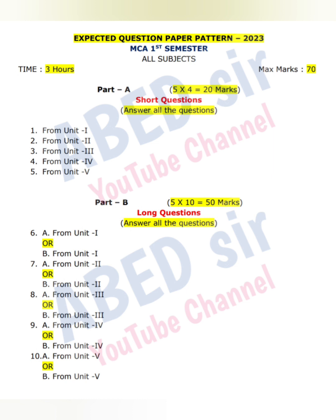In part A, short questions will be asked. You have to answer all the questions. There is no choice. One question from each unit and each question carries 4 marks. So, 5 times 4, 20 marks you will get from part A.